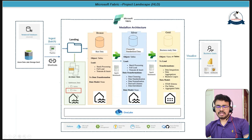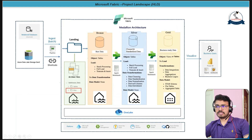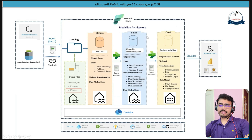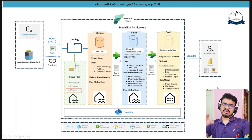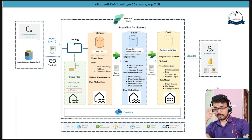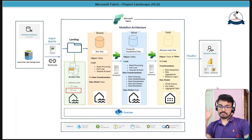Data coming from our source system will be stored in our landing folder under the lakehouse. Then we process it to the raw layer, then silver, then gold using T-SQL or Spark notebooks. We are following the medallion architecture using a single lakehouse. Finally this data goes to business users for Power BI consumption — this is what Microsoft Fabric recommends for OLAP applications.